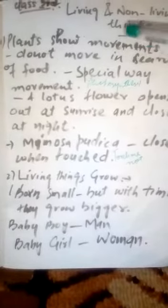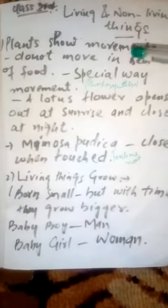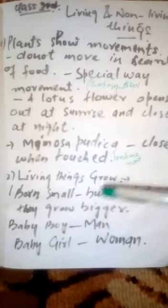Today we read two more features of living and non-living things: living things show movement, non-living things do not show movement; and living things grow, non-living things do not grow. Now, your homework is to find the answer to the question: what is a living and a non-living thing? You will give the answer in three lines. Thank you.